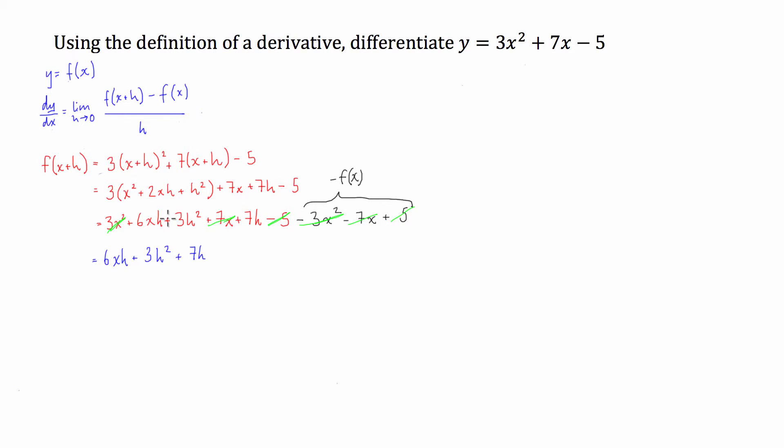So what we're left with at the top is 6xh plus 3h² plus 7h. Now that's what the result of this numerator operation that we have here. So now what we're going to do is divide all that by h.